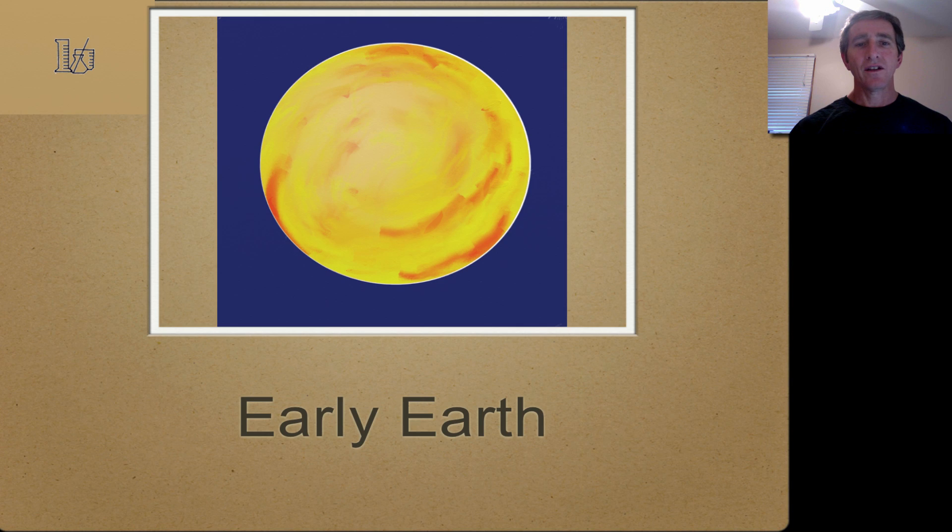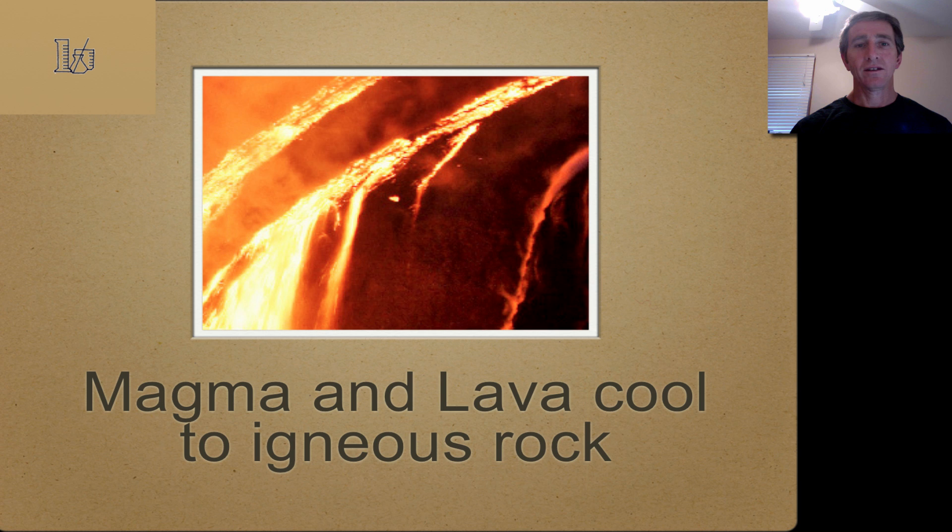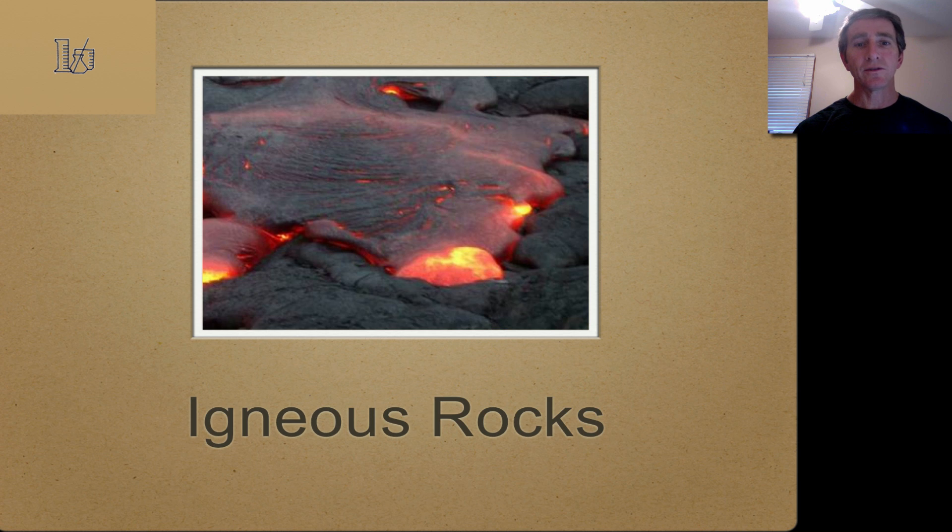How to draw the rock cycle. The earth began hot, really hot. Magma, lava. Lava and magma when they cool become igneous rock.